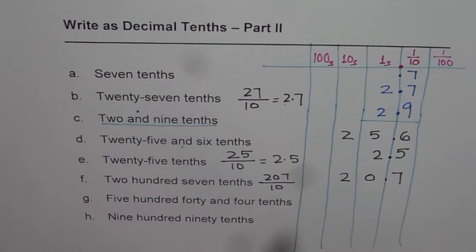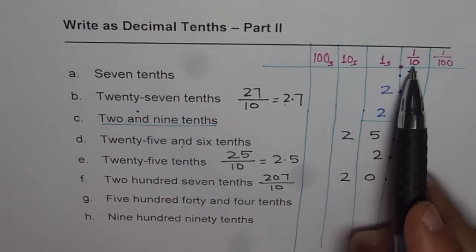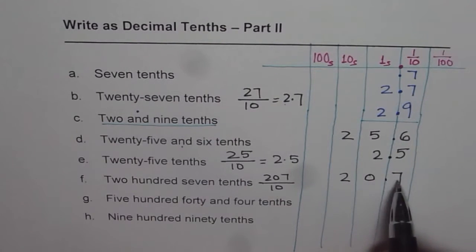Now look at it from the other angle. Two hundred seven—since seven ends in the tenth place, we call it two hundred seven tenths. That is how you can rename your numbers. I hope you are getting the concept.